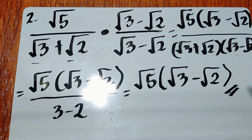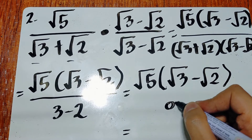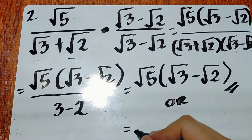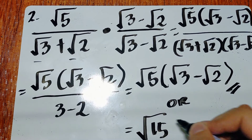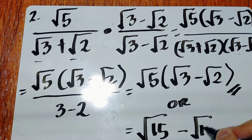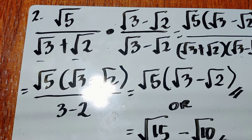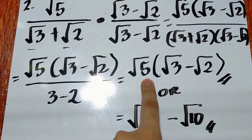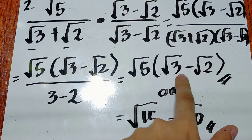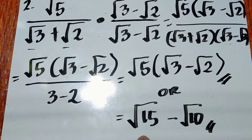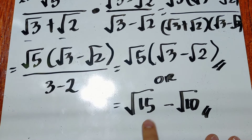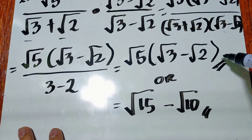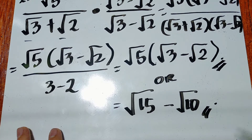The answer can be written as square root of 5 times (square root of 3 minus square root of 2), or distributed as square root of 15 minus square root of 10. Both forms are acceptable as the final answer.